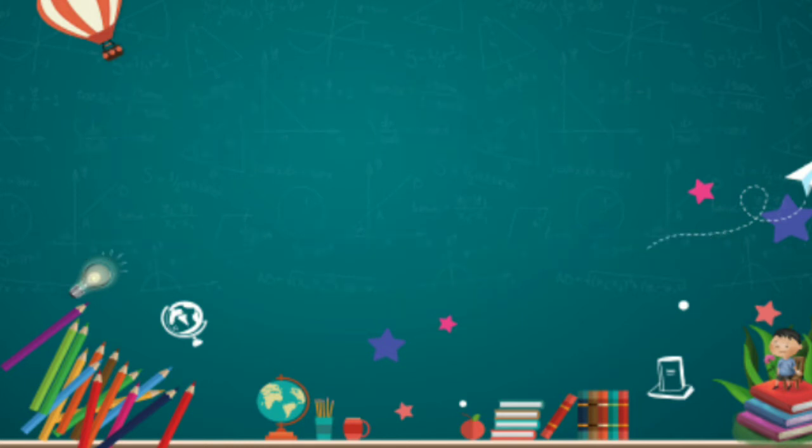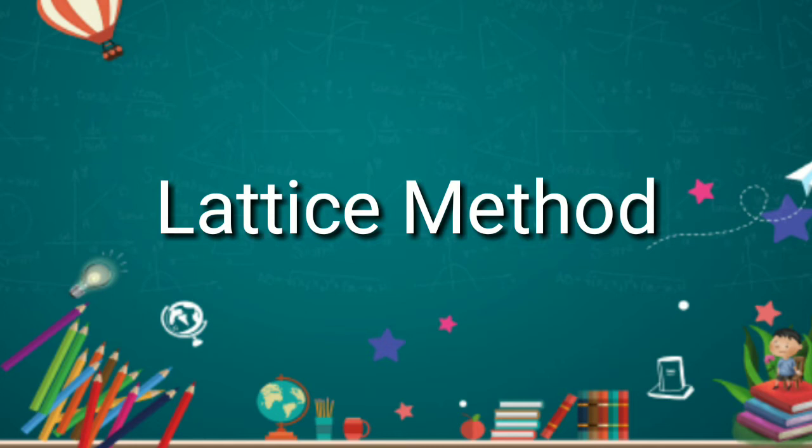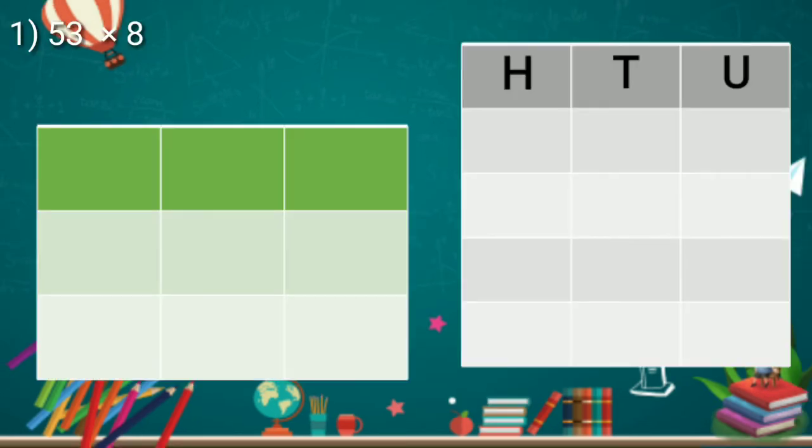Today, we are going to learn lattice method. So, let's see examples. First example is 53 multiplied by 8.